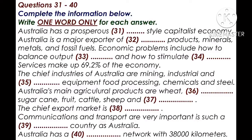The chief industries of Australia are mining, industrial and transport equipment, food processing, chemicals, and steel. Australia's main agricultural products are wheat, barley, sugarcane, fruit, cattle, sheep, and poultry.